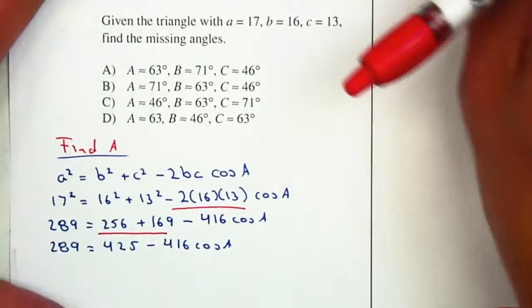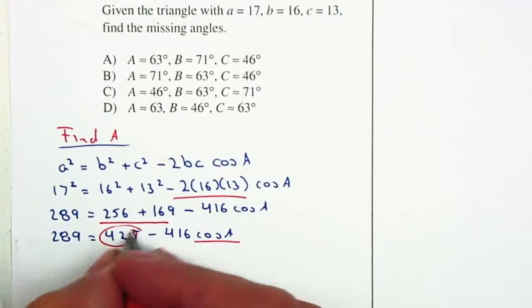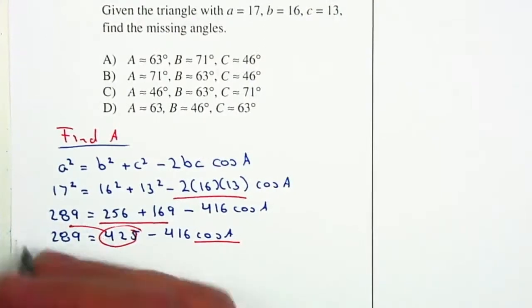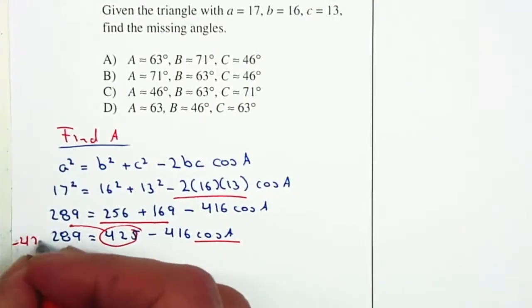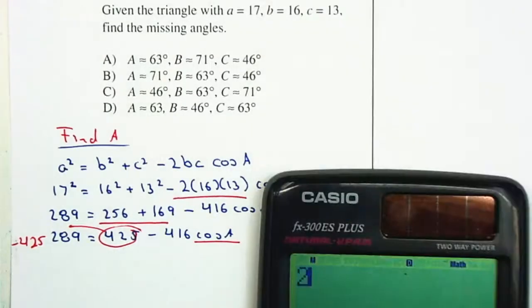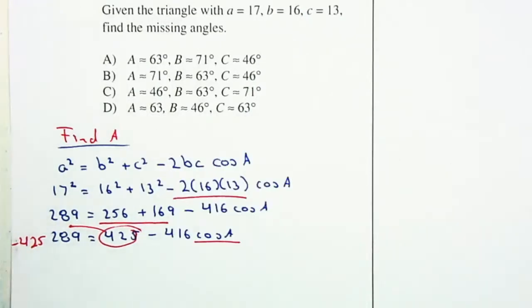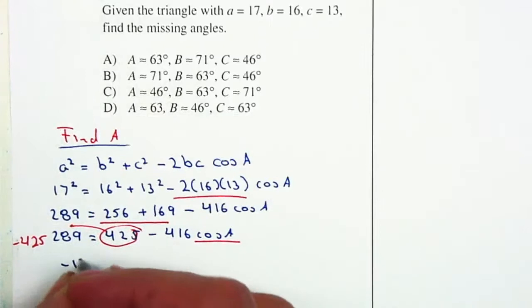I'm going to move the 425 to the left. I'm trying to solve for cosine of A, so I'm going to move this to the left, or you can do minus 425 on both sides. That gives me 289 - 425 = -136 = -416 cos A.